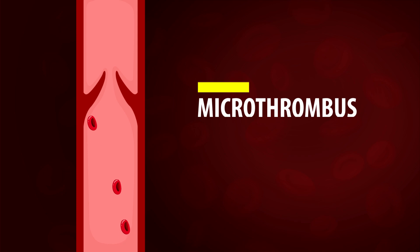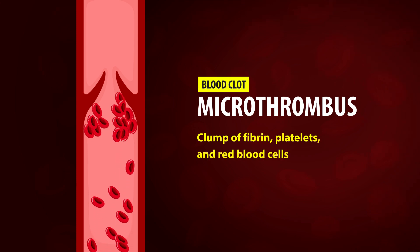Additionally, the cytokines secreted by the macrophages will result in the microscopic clotting of platelets and red blood cells called microthrombus, or a blood clot. This will lead to more hypoxemia and complete lung failure.